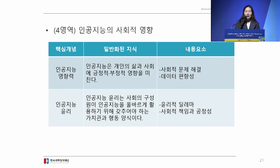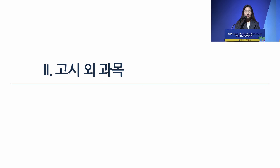The fourth domain is about the social impact of AI. In the three previous domains, students learn and experience how AI works. In the fourth domain, students learn about the positive and negative influences of AI and discuss the broader impact of AI on society.